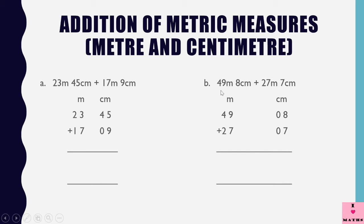Look at this sum: 49 meters 8 centimeters added to 27 meters 7 centimeters. Here both centimeter values are single digits, but centimeters must have two columns. So 8 centimeters is written as 08, and 7 centimeters is written as 07. So we write: 49 meters 08 centimeters plus 27 meters 07 centimeters.